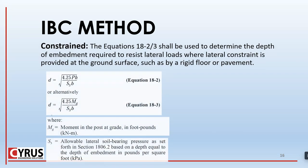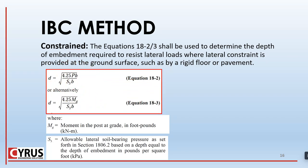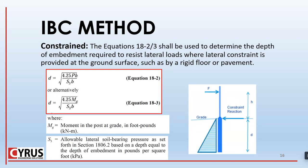For the constrained situation, Equation 18-23 is used to determine the depth of embedment required to resist lateral loads where lateral constraint is provided at the ground surface, such as by a rigid floor or pavement. Similar to the non-constrained method it has F and H, but uses S3, which considers the whole depth of the footing — not only one-third — because the constraint reaction at the top results in a triangular soil pressure distribution, allowing the whole depth to transfer the load.